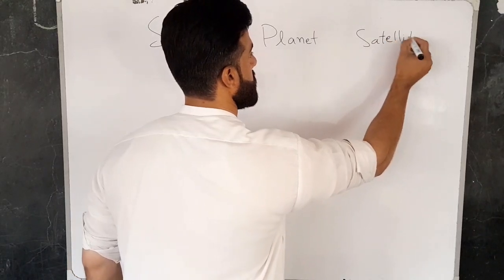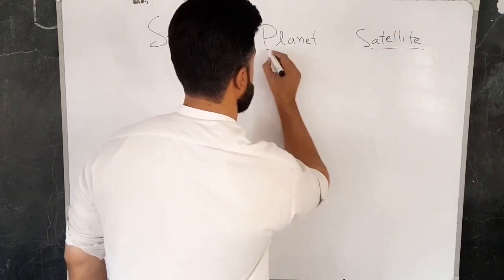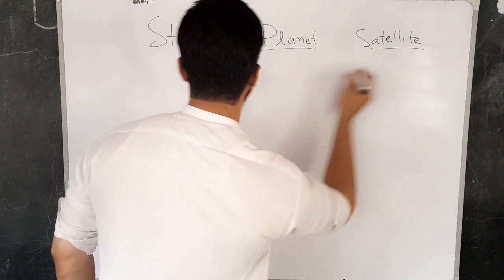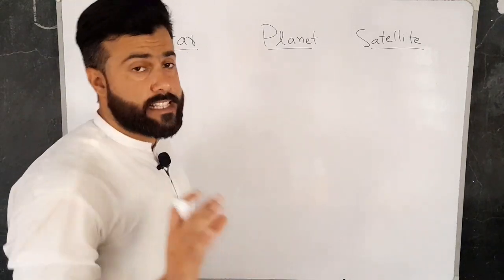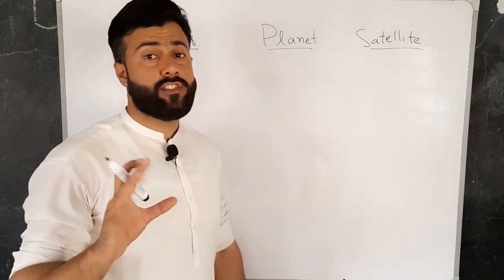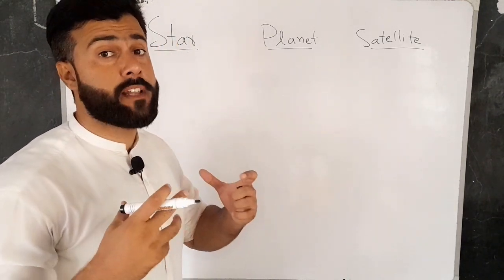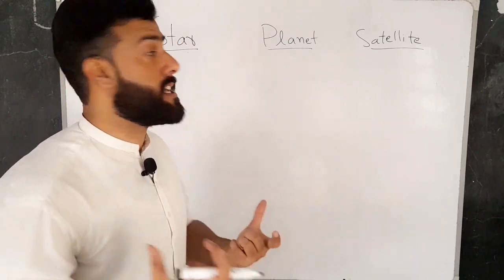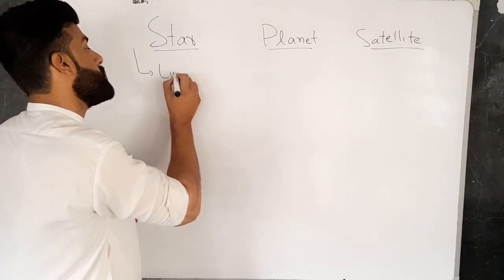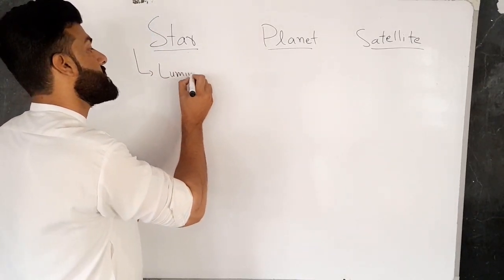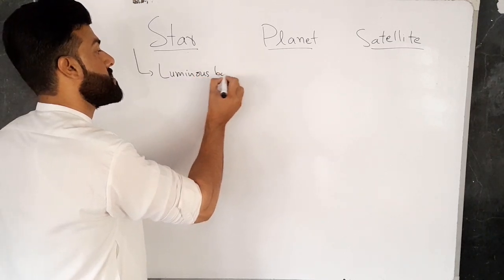The planet, satellites, and stars are the same category of celestial objects. The scientific term for stars is the luminous body.